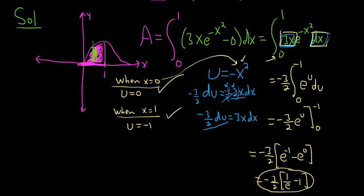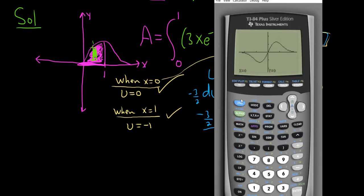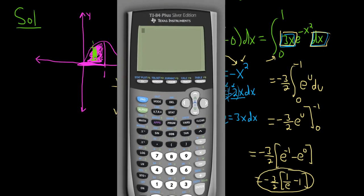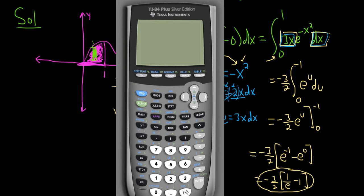Let's type it into the calculator to see what the decimal would be. To get out of the screen, you hit second, quit. So it would be negative. The negative key is down here. Let me put it in parentheses actually. Negative parentheses, 3 over 2, parentheses, times, and then parentheses, 1 divided by e.